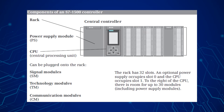The power supply modules provide the internal voltages required by the programmable controller. Up to three system power supply modules can be used in the programmable controller as needed. Load voltages or load currents are provided via external load current supplies, which can also provide 24V primary voltage for system power supply modules.